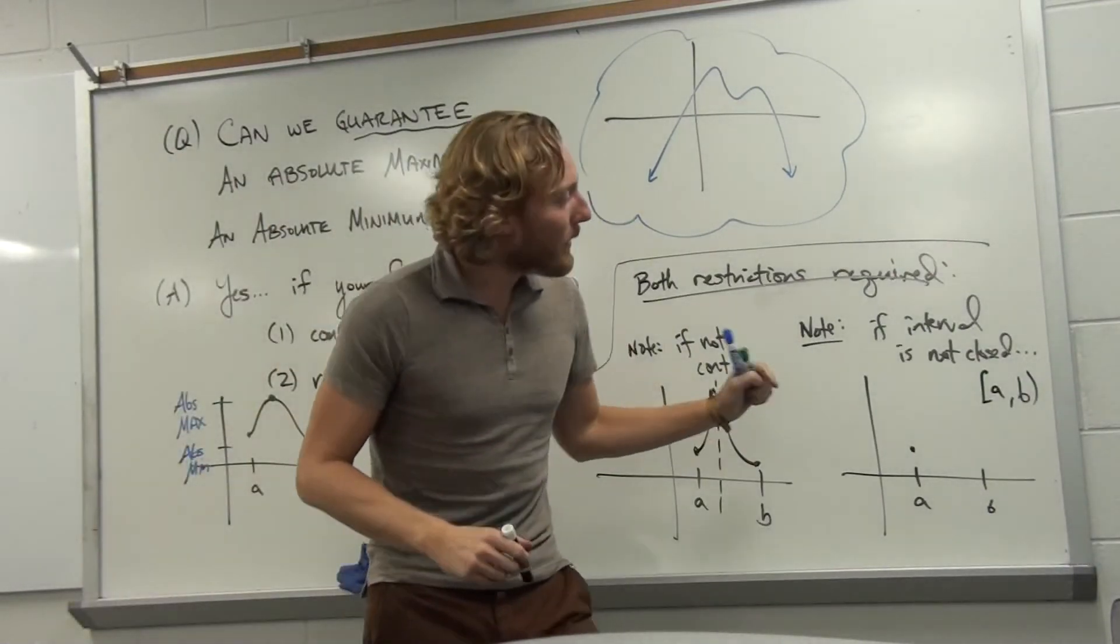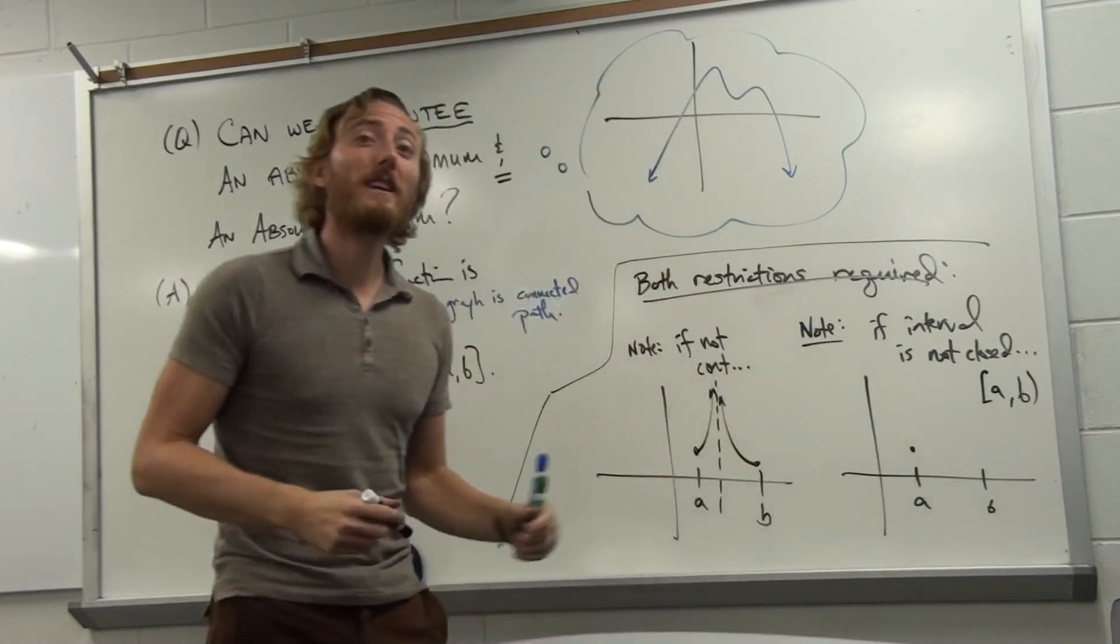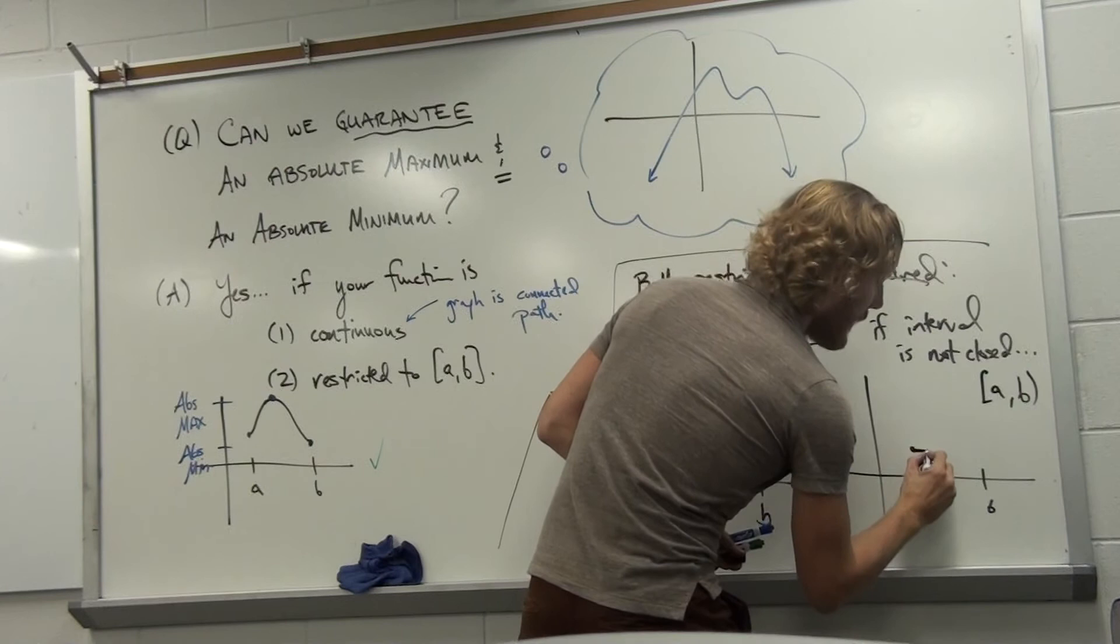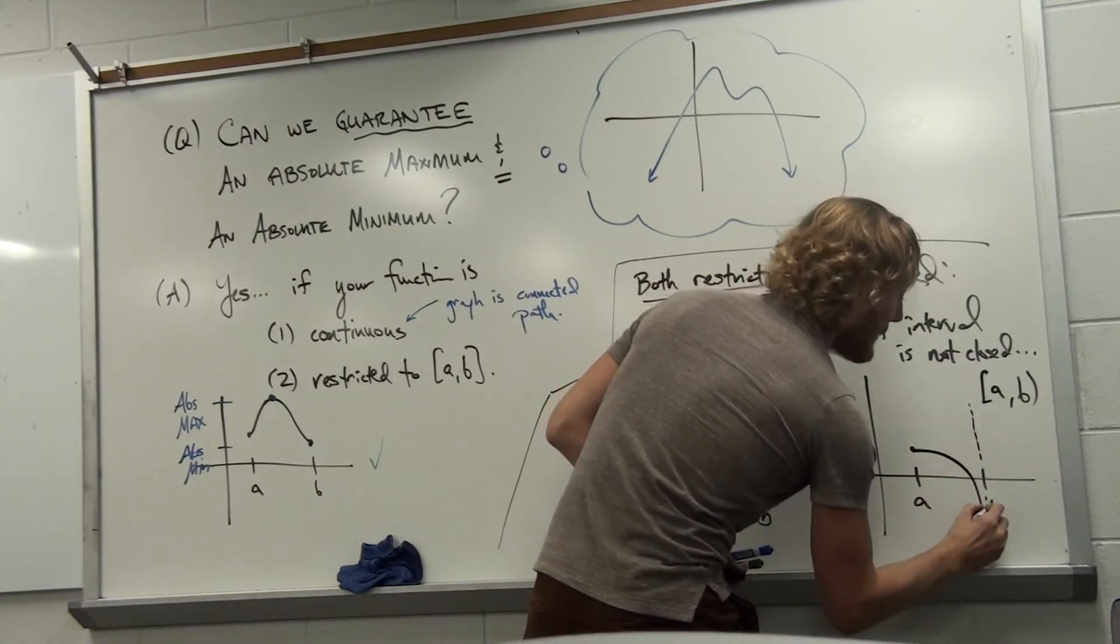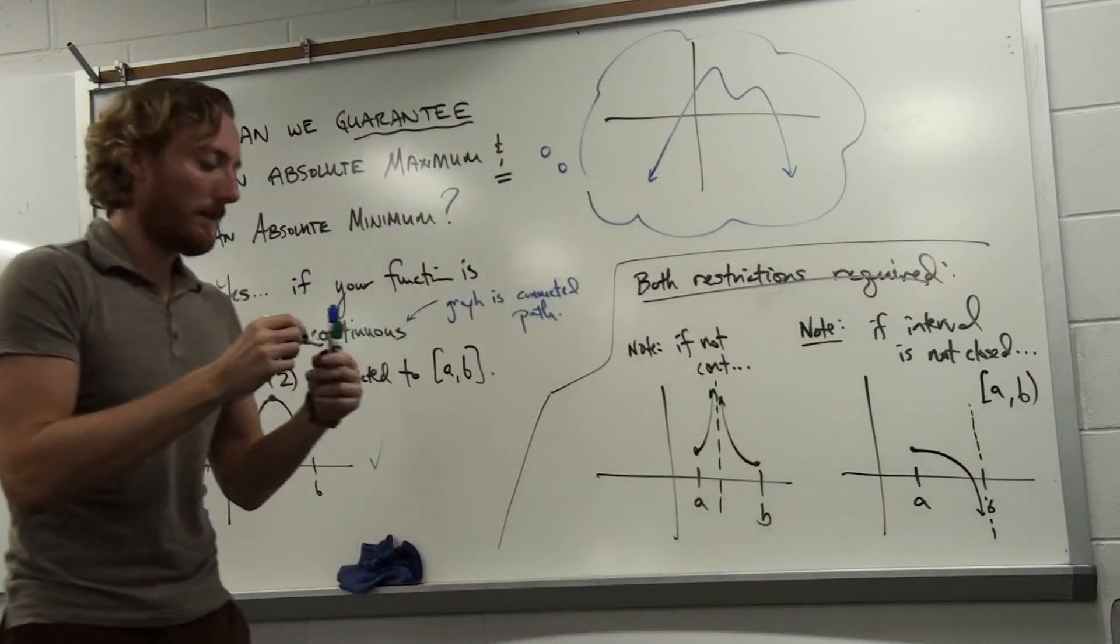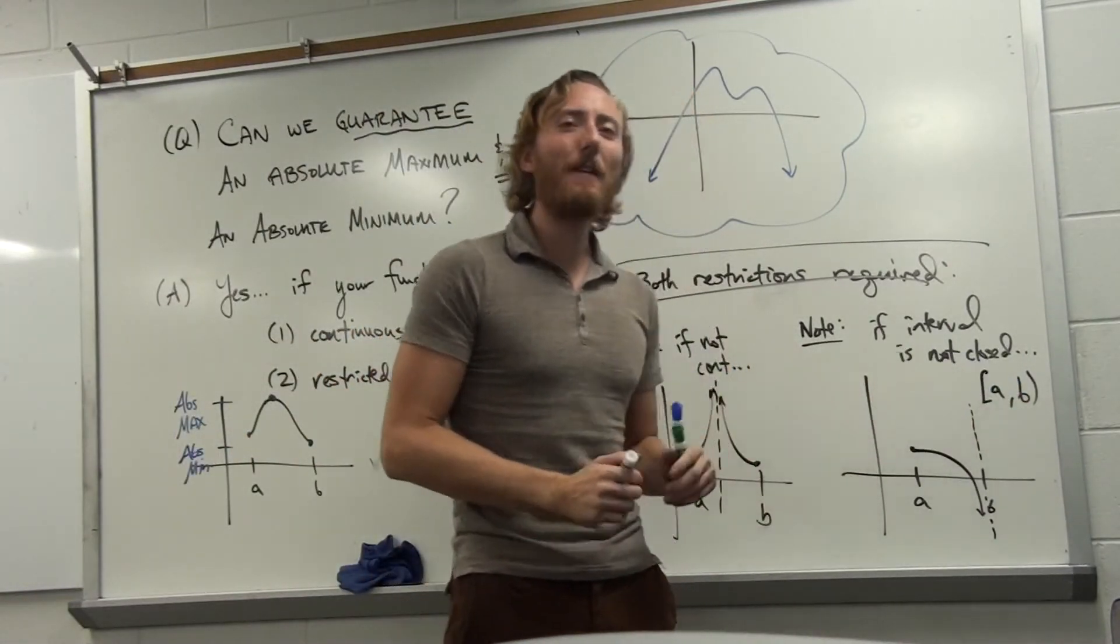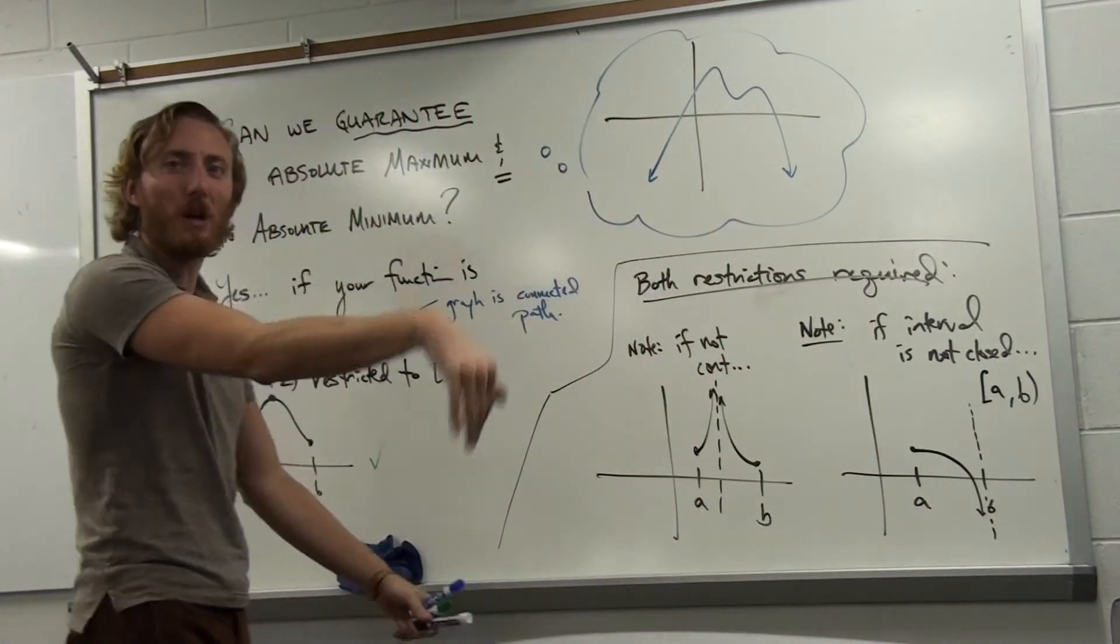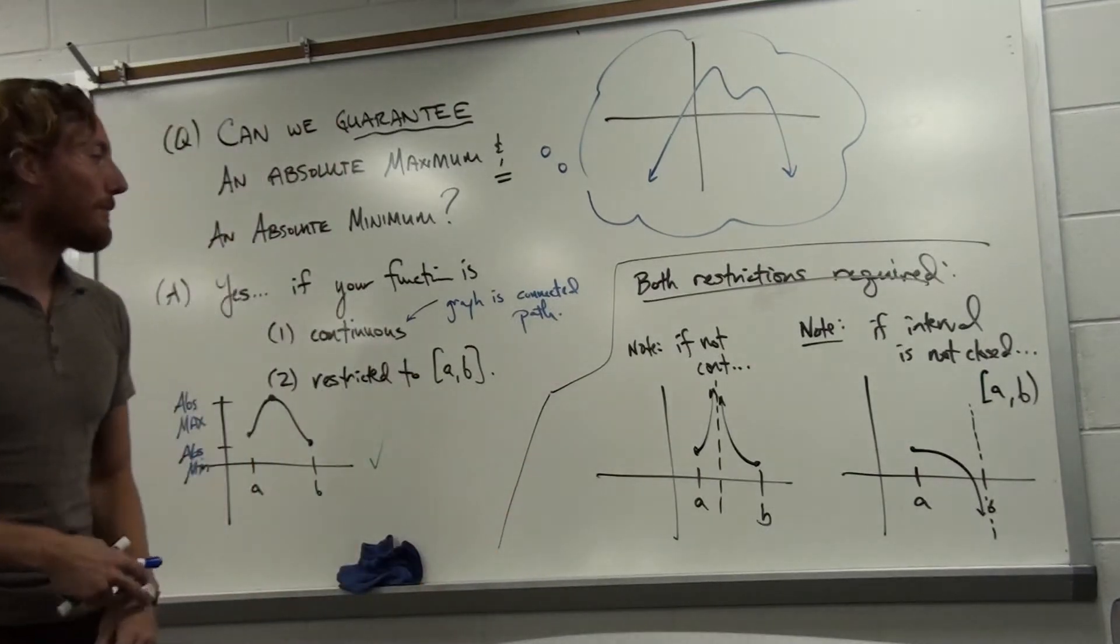If b is not included, we don't have to get all the way to b - just really close. That presents a problem. You could have an asymptote at x=b. You never actually have to get to b, so you could use that line at b as an asymptote that you approach but never touch. And you would not have an absolute maximum.